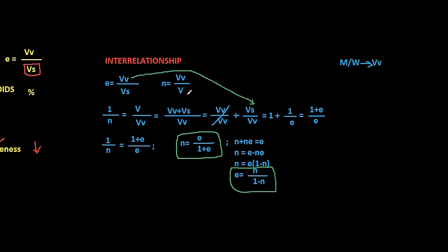So that means both the numerator and the denominator change for porosity. That makes it a little inconvenient for us to use this in our equation. For our convenience, we use only void ratio in most cases.